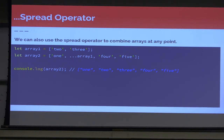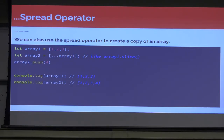That allows you to have a ton of control over your arrays. If you need to insert things at a certain area after something else, you have full control without having to loop over them. You can also use the spread operator to create a copy of an array. If you just did array1 = array2, it would keep a reference. But you can spread array1 into a new array, so if you push 4 onto array2, you now have two different arrays that are not keeping a reference to each other.